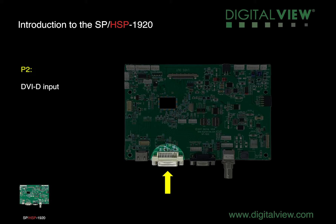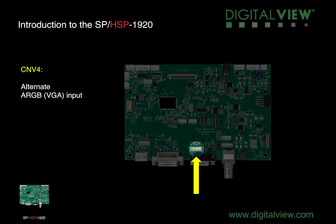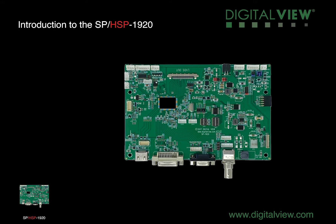P2 is the DVI-D input. P1 is the ARGB or VGA input. CNV4 is an alternate input for ARGB or VGA.